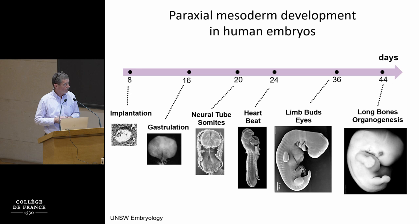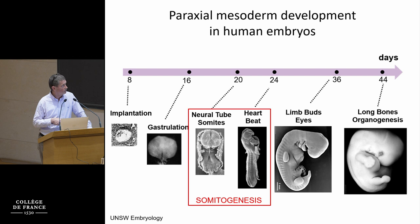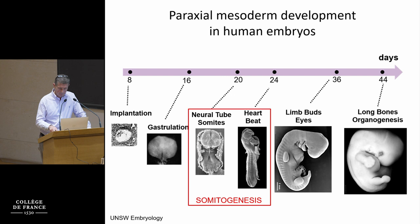Of course this was all done in model organisms, mostly in chicken, mouse, and also zebrafish. We were interested in trying to learn whether there would be a similar system operating in humans. This is clearly not possible to study directly in embryos, because in humans somatogenesis takes place very early — between three and four and a half to five weeks — at a time when women usually don't even know they're pregnant, and there are very few embryos available at these stages.